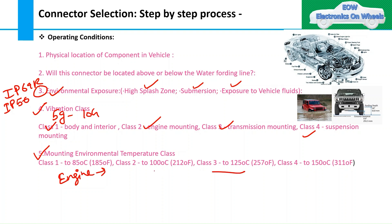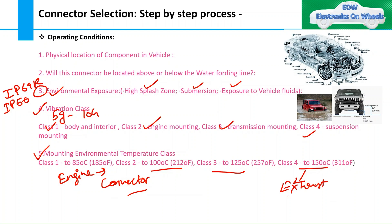The fifth factor is the environmental temperature class. The temperature range depends on where the connector is located. In the engine zone, temperatures can reach around 100–125°C. Near the exhaust, temperatures can reach 150–200°C or even 250–300°C. You must verify that the selected connector can withstand the temperature class of its intended location.